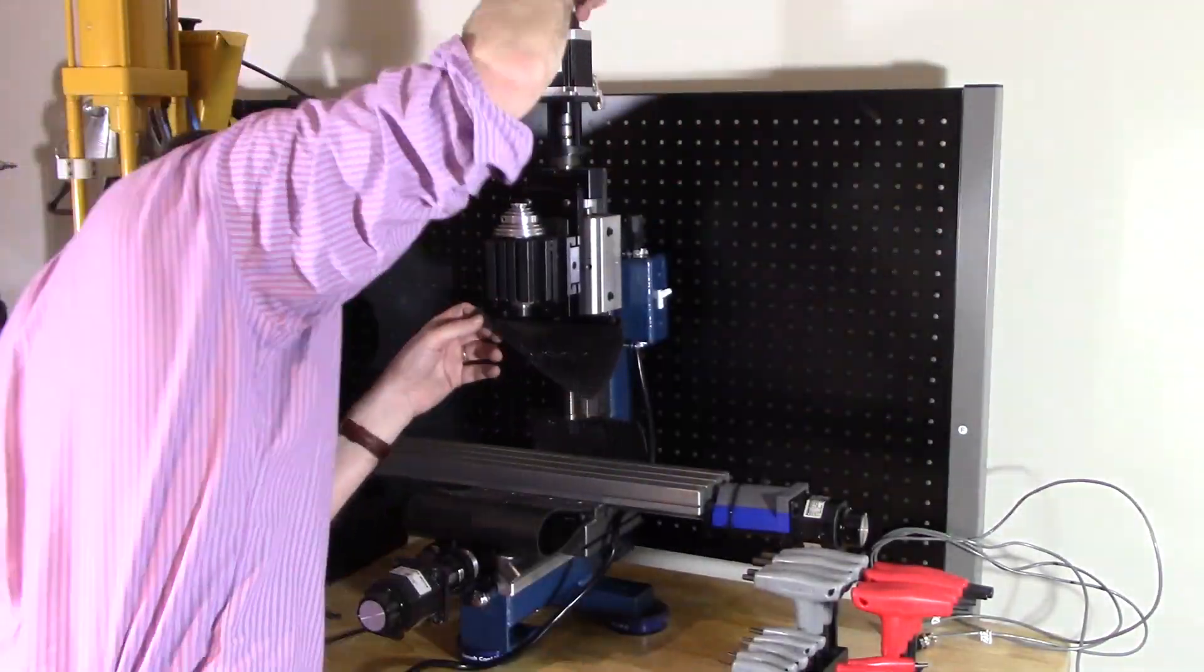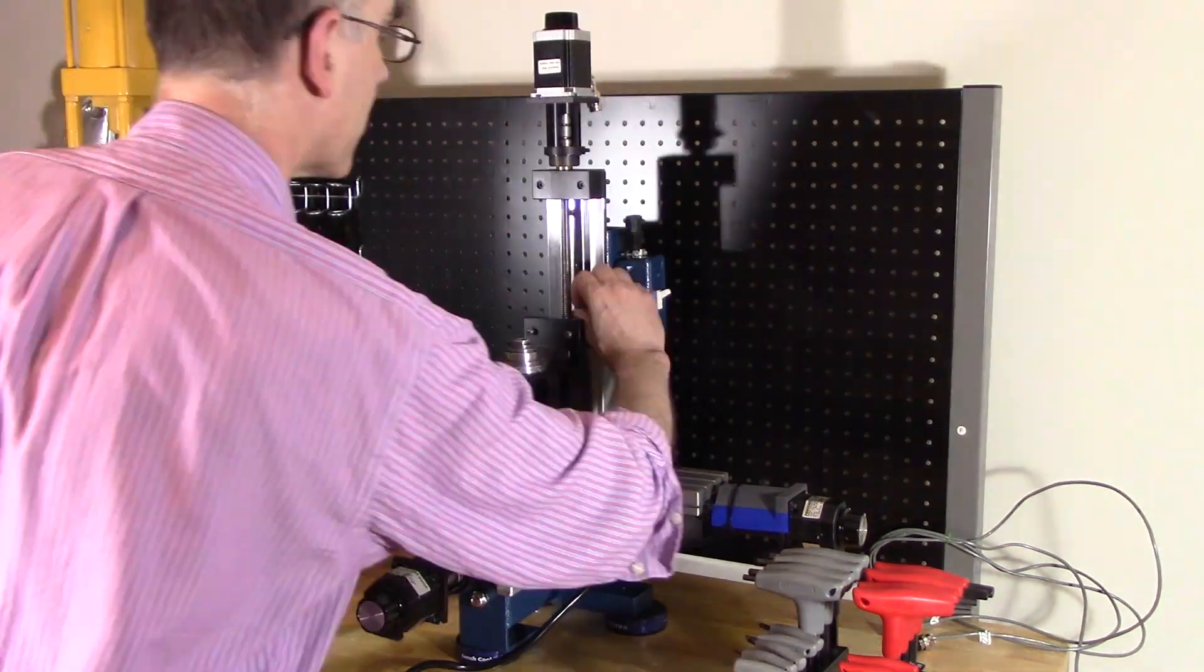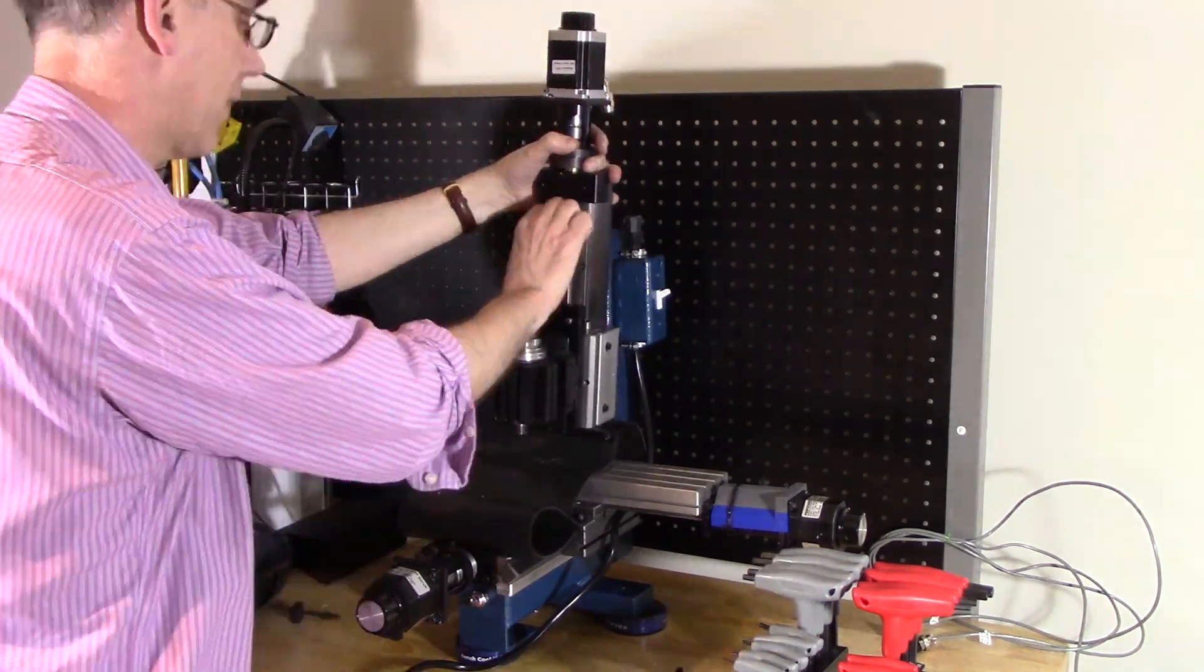I had to move the Y to get access to the ones on the bottom. And then once all the screws are out, it just pulls straight off. The screws are to the either side of the ball screw.